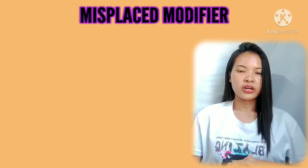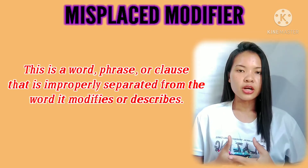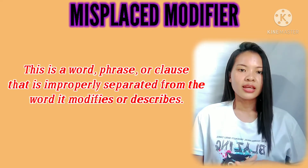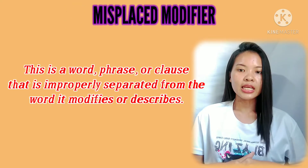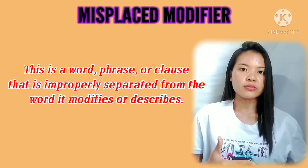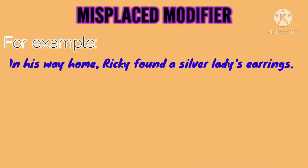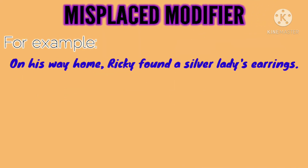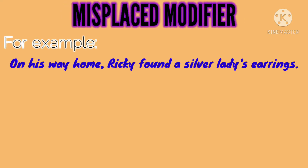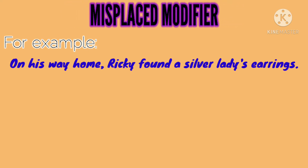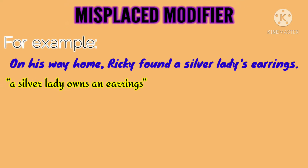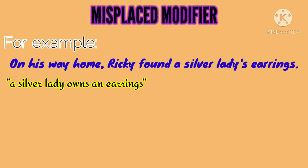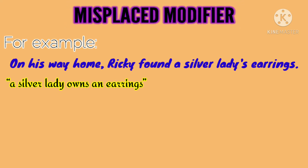So what is a misplaced modifier? A misplaced modifier is a word, phrase, or clause that is improperly separated from the word it modifies or describes. For example: 'On his way home, Ricky found a silver lady's earrings.' In this example, the thought is that a silver lady owns the earrings, which is very confusing.